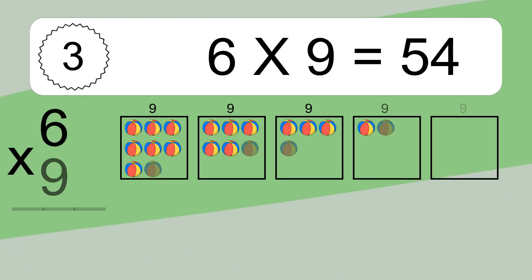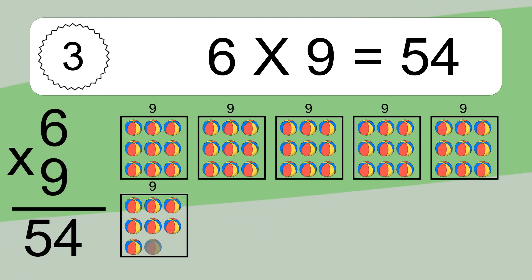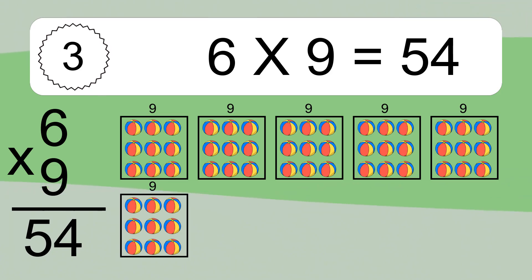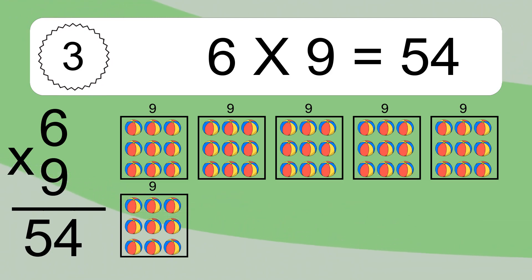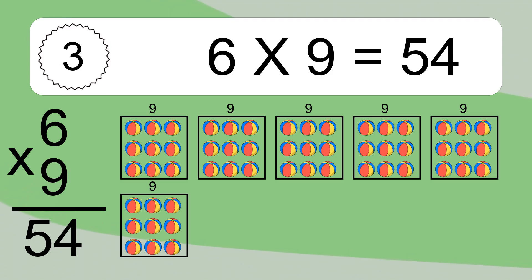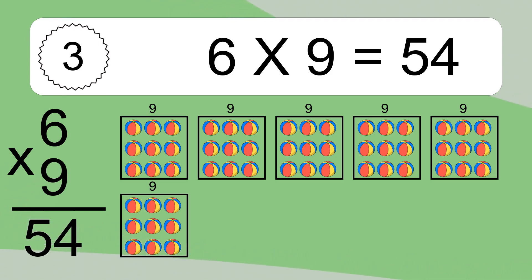6 times 9 equals 54. We have 6 boxes, and each box has 9 colorful balls inside. If you count all the balls in all the boxes together, you will have 6 times 9 balls. This equals 54 balls.